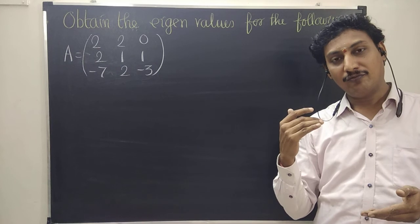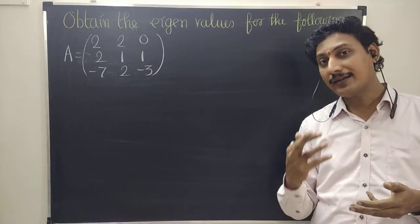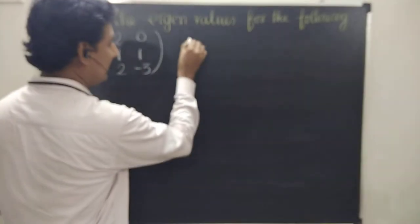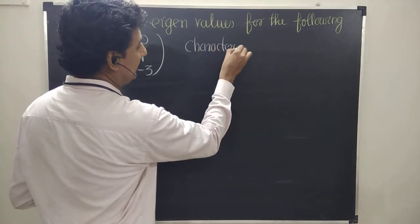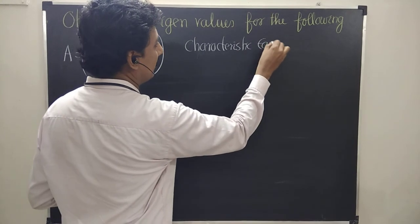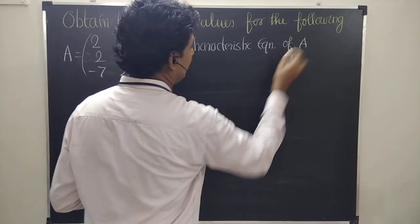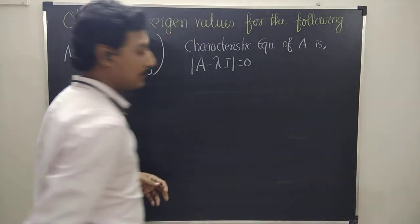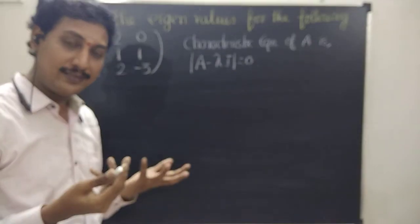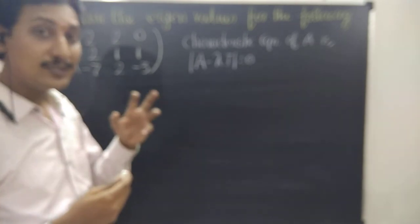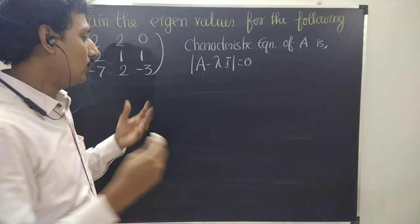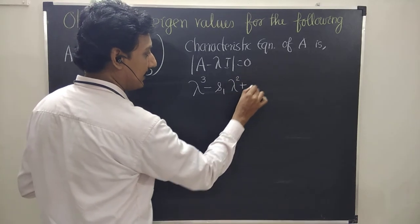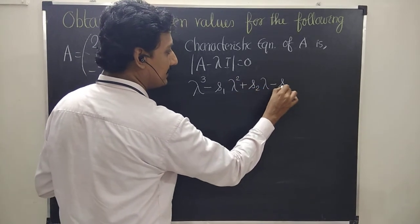Once we know the eigenvalues, then we need to get the characteristic equation. What is the characteristic equation for a 3 by 3 matrix? The characteristic equation of A is: determinant of (A minus lambda) equals 0. For a 3 by 3 matrix, the equation is: lambda cubed minus S1 lambda squared plus S2 lambda minus S3 equals 0.